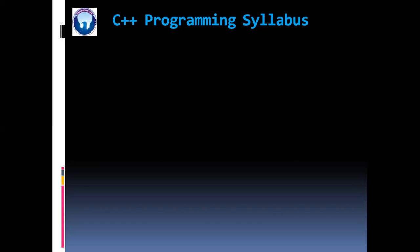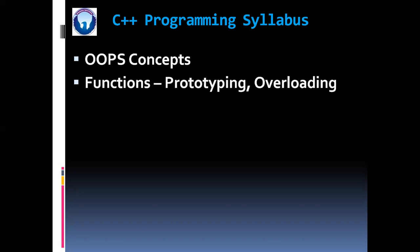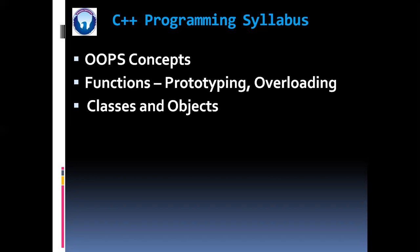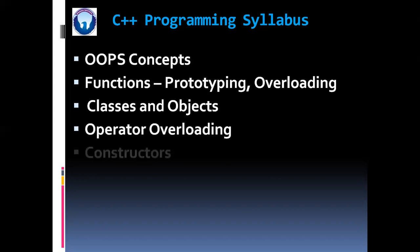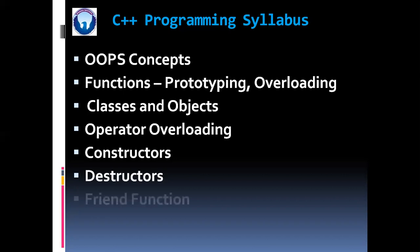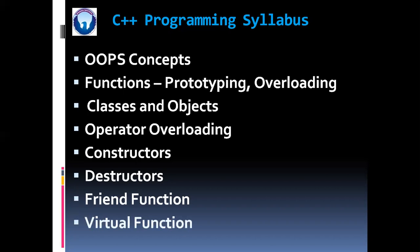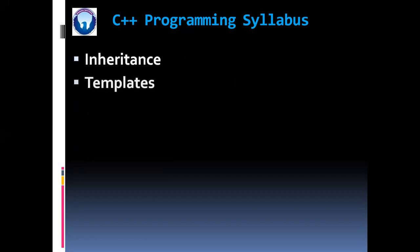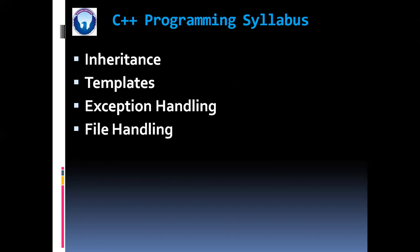Now we are going to discuss the syllabus of C++ programming language. In C++, initially we are going to see object oriented programming concepts, then functions with prototyping and function overloading, classes and objects, operator overloading, constructors with all their types, destructors with their types, friend functions, virtual functions, inheritance with all five types, templates, exception handling, and at the end, file handling.